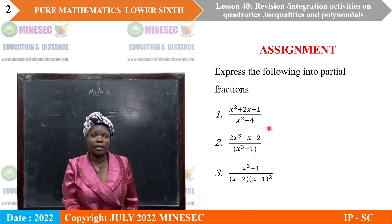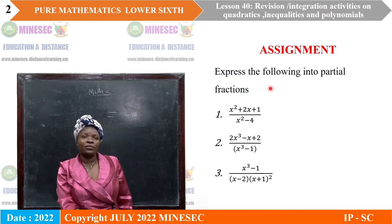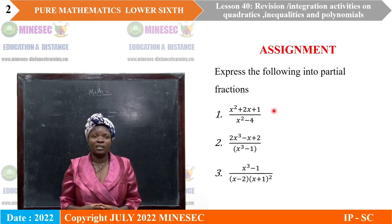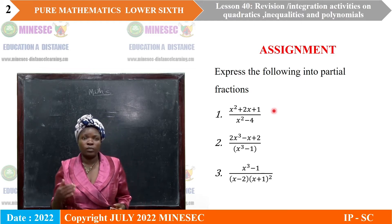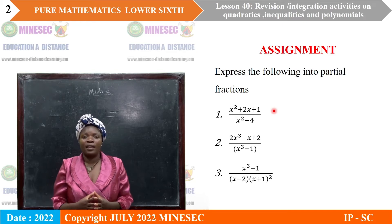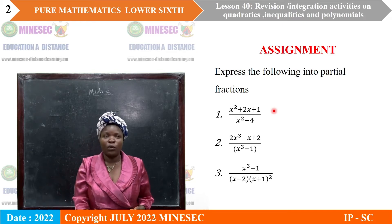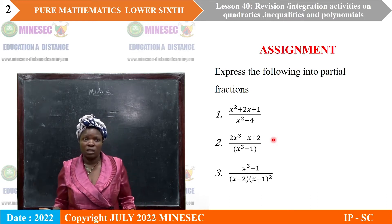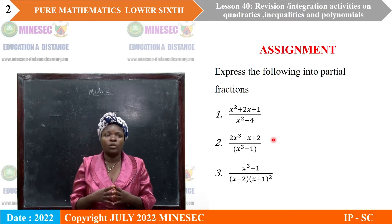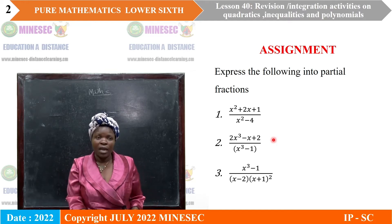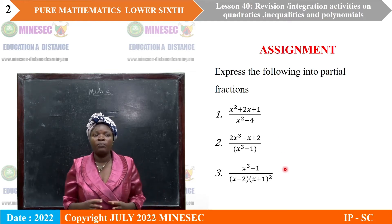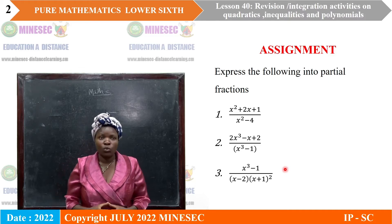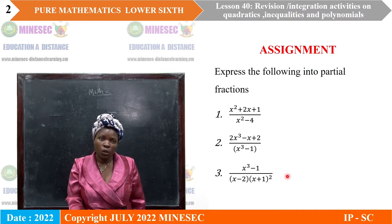This is the assignment. Express the following into partial fractions. Number 1: x squared plus 2x plus 1, all divided by x squared minus 4. Number 2: 2x cubed minus x plus 2, all divided by x cubed minus 1. And number 3: x cubed minus 1, divided by x minus 2 times x plus 1, all that squared.